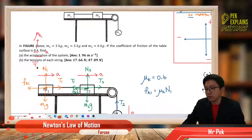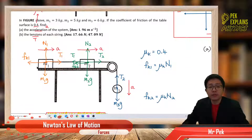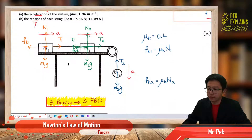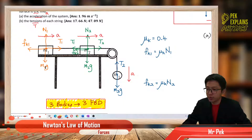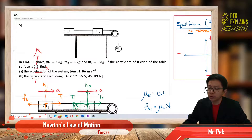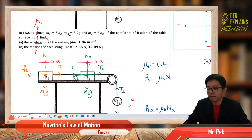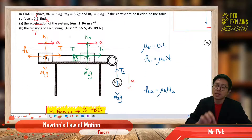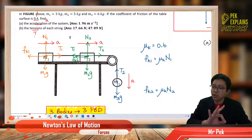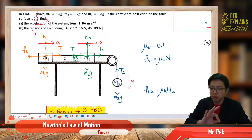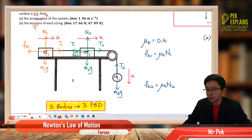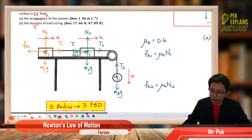So first, we must draw the free body diagram. I have drawn it out for you. Since you have three objects, that means you must have three free body diagrams. Draw all the forces acting on these three objects.